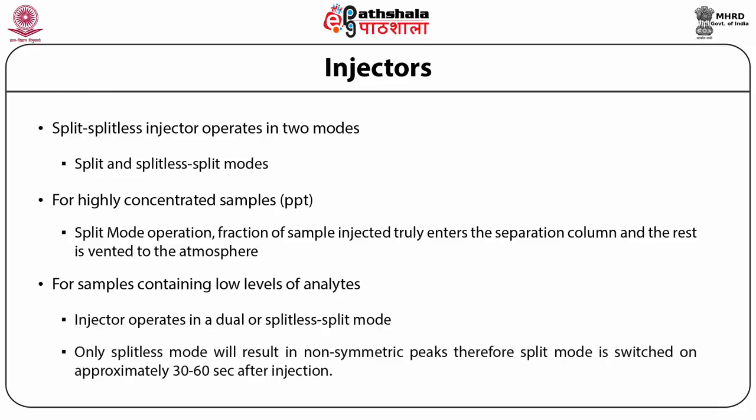If the splitless mode is continued throughout the run, the peak will be non-symmetric and will interfere with peak integration. To overcome this problem, split mode is switched on approximately 30 to 60 seconds after injection. This dual splitless-split mode permits the majority of the sample to load onto the column while clearing remaining samples to allow for a clean, well-shaped chromatographic peak.